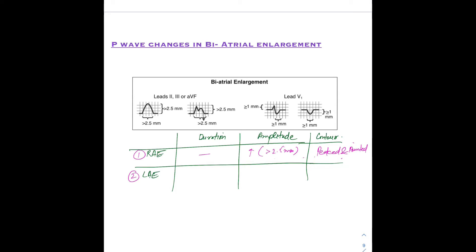For left atrial enlargement, it is essentially the opposite of right atrial enlargement. The amplitude stays the same, but the duration increases beyond normal. The contour becomes bifid or M-shaped.